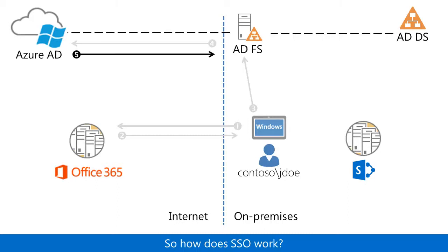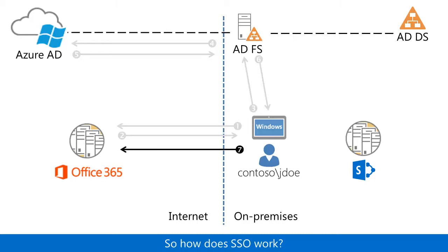Azure AD sends back verification of authentication to ADFS, which then sends the results to the user's computer. The user's computer sends a new request with the authentication verification results to the Office 365 SharePoint farm, which sends the requested page to the user's computer.